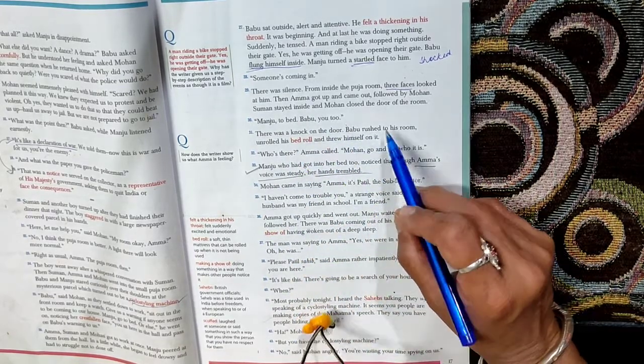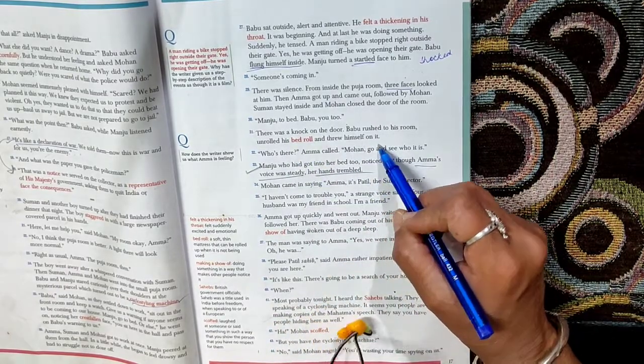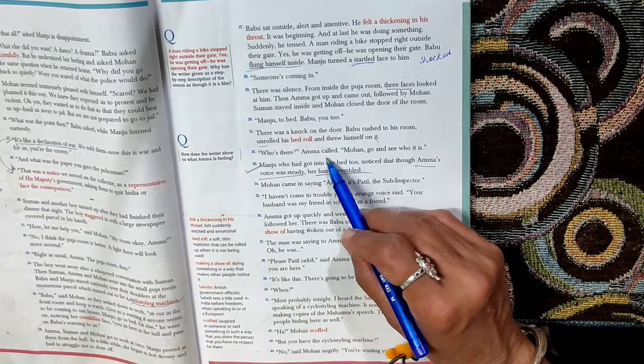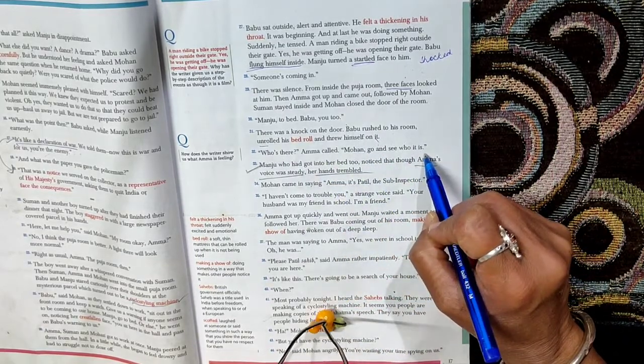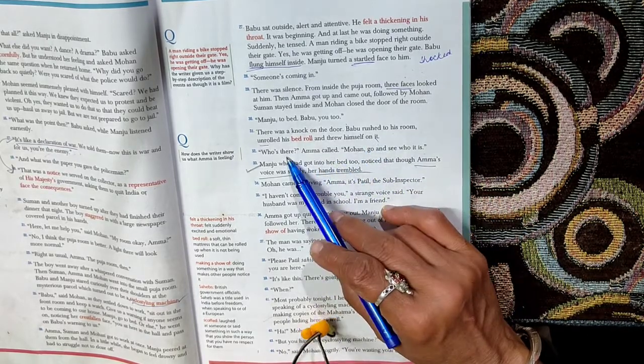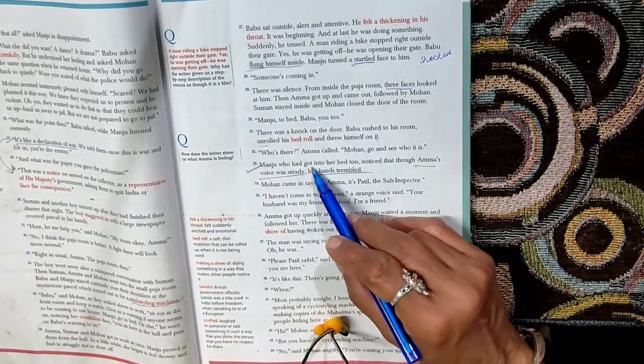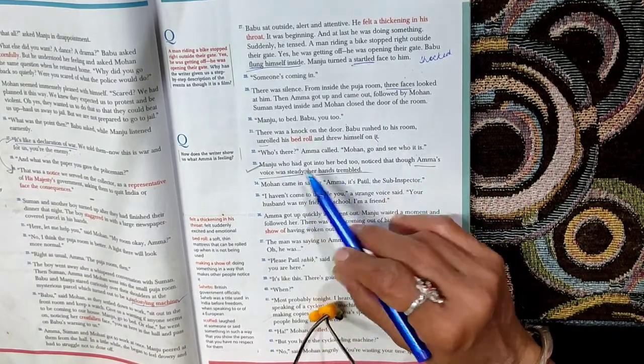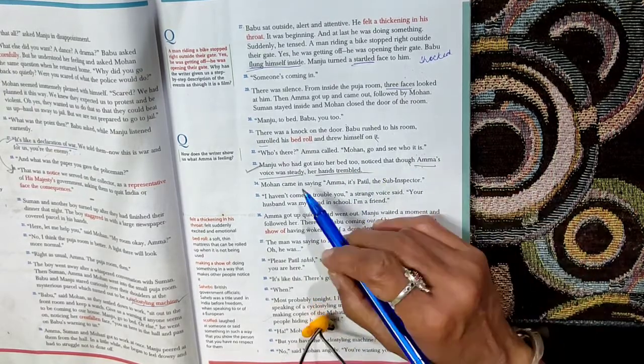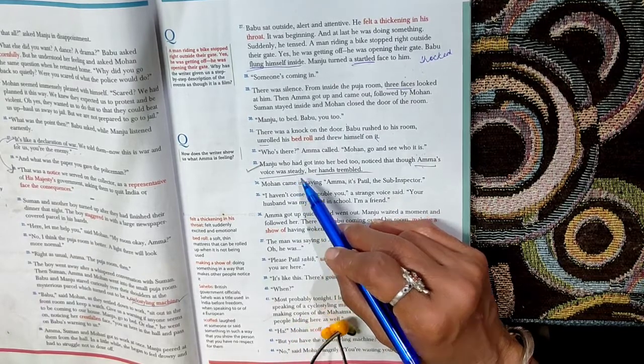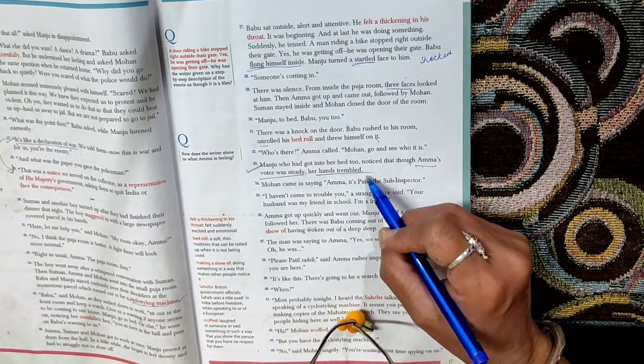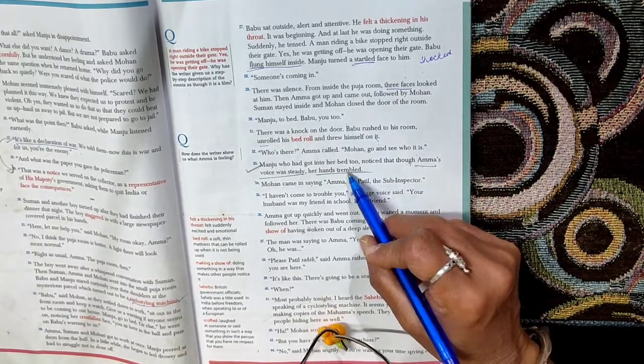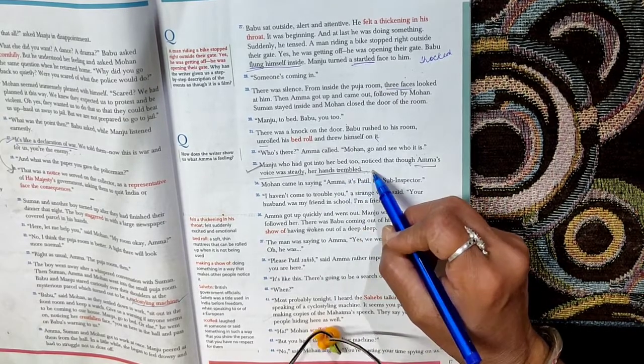There was a knock on the door. Babu rushed to his room, unrolled his bedroll and threw himself on it. Unrolled means he opened up the bedroll and he threw himself on it wanting to sleep. Who's there? Amma called. Mohan, go and see who it is. Now somebody is knocking at the door. So Amma calls out, who's there? And then she tells Mohan, go and see who it is. Manju who had got into her bed too noticed that though Amma's voice was steady, her hands trembled. But her hands were shaking or trembling. This is because of nervousness, also this can be because of age.